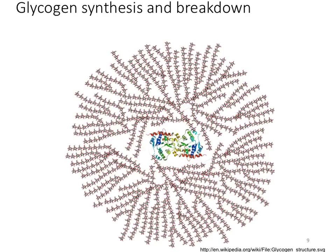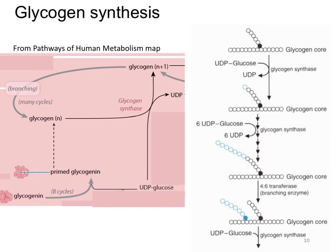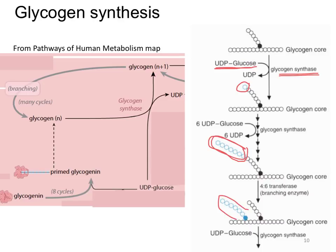Here are two different depictions of glycogen synthesis: on the left is how it's shown on our metabolic map, and the right is a cartoon. The first thing to note is that activated glucose is used — that's UDP-bound glucose. Glycogen synthase is the main enzyme; the UDP comes off and the glucose is attached at the end. After several rounds of glycogen synthase activity, adding lots of glucose, it's time to make a new branch. Branching enzyme, or 4-6-transferase, transfers a chunk of the chain to form a new branch point, connecting carbons 4 and 6 of glucose.